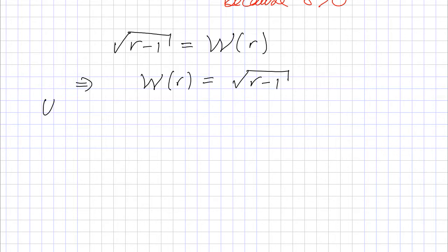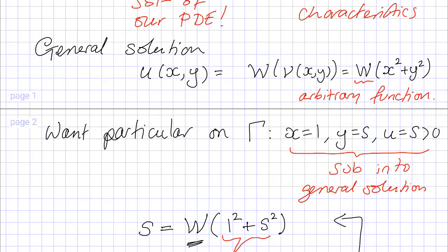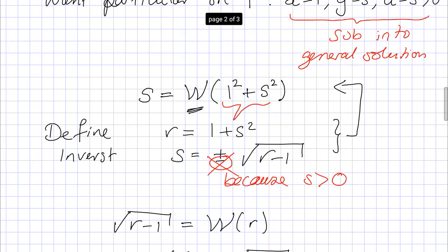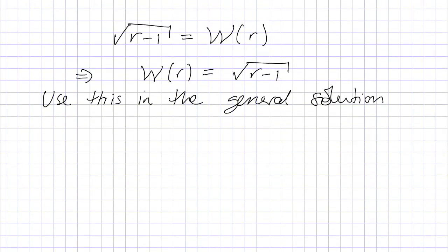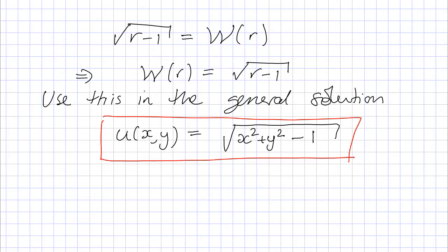The final step is to use this in the general solution. Going back to the general solution, u equals w of x squared plus y squared. Now that we know what w is, we substitute the argument x squared plus y squared into w, giving the particular solution: u of x and y equals the square root of x squared plus y squared minus 1.